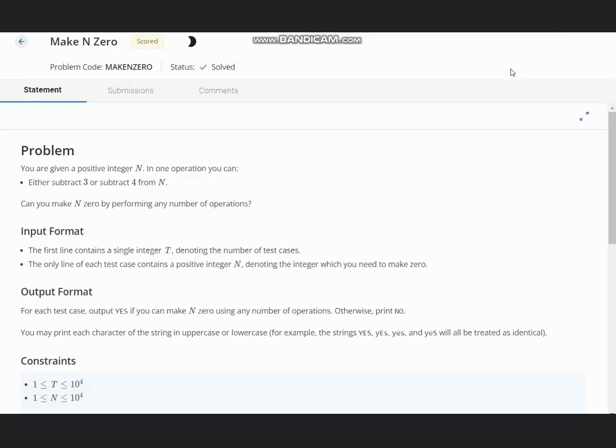Hello everyone, welcome back to the channel. Here we are discussing the question Make N Zero on CodeShift. The problem states: you are given a positive integer N. In one operation you can either subtract 3 or subtract 4 from N.